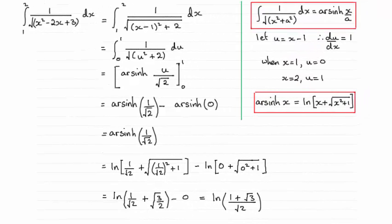Hi there. For this question, we're asked to integrate between 1 and 2: 1 divided by the square root of x squared minus 2x plus 3, with respect to x.